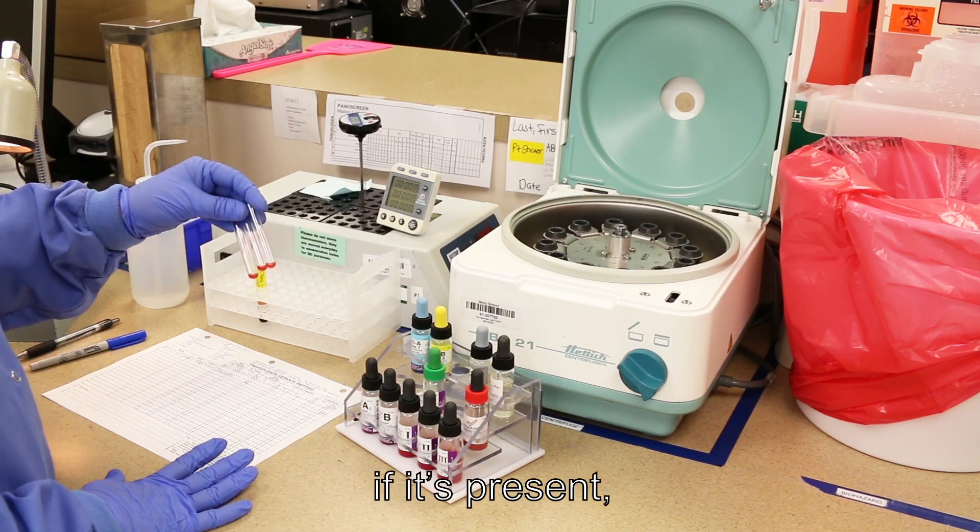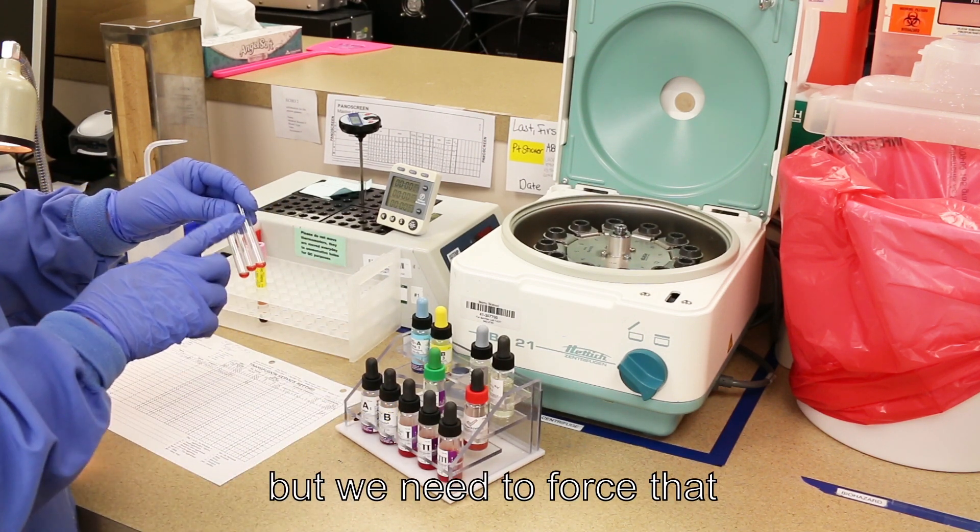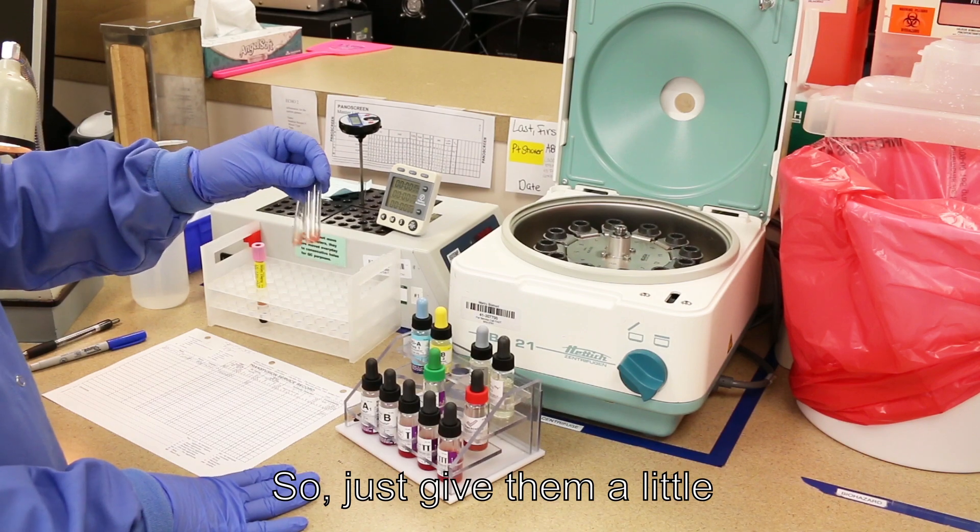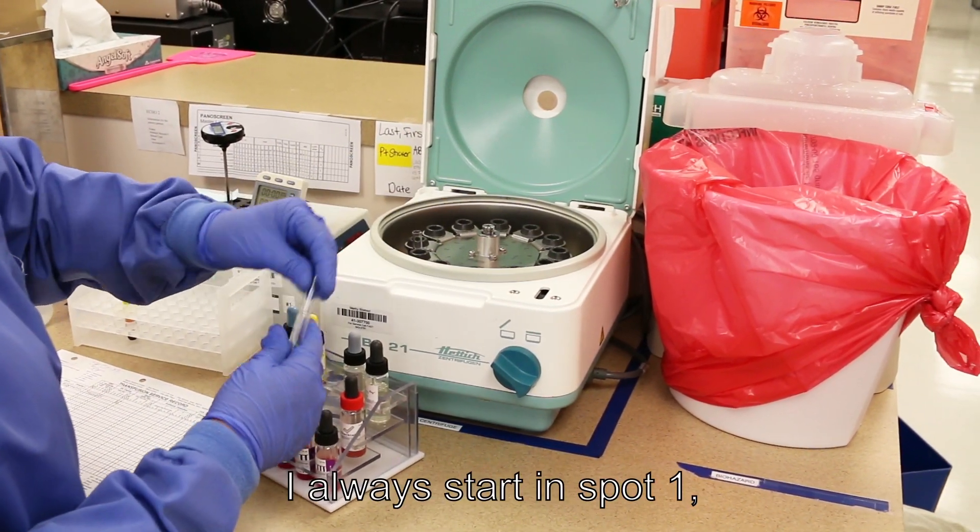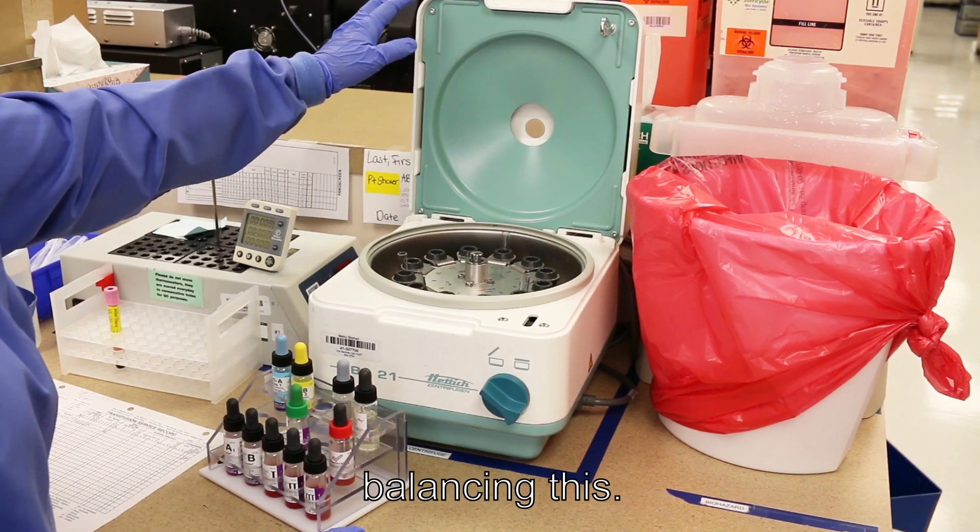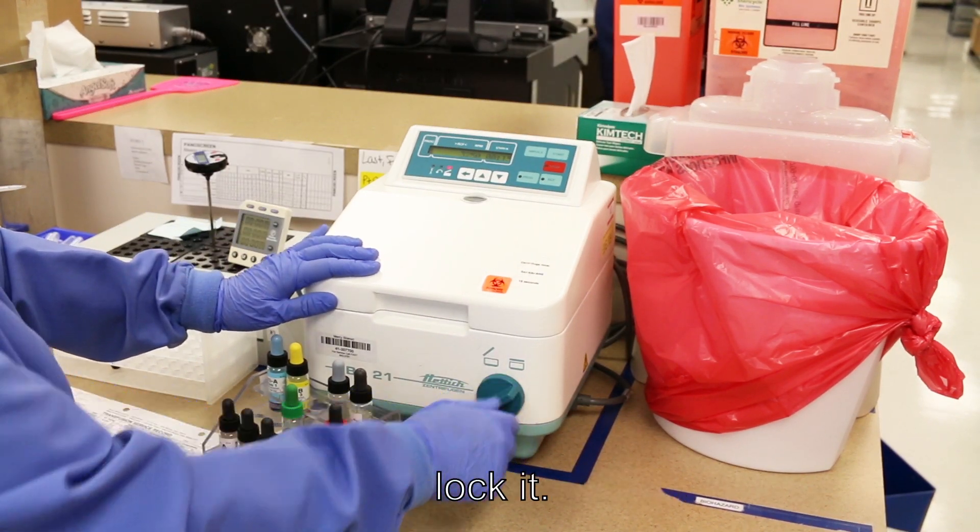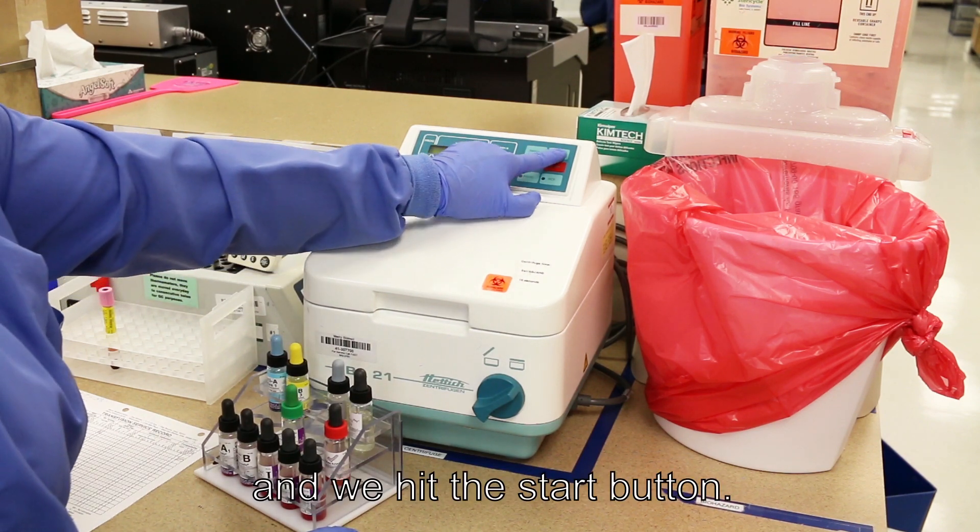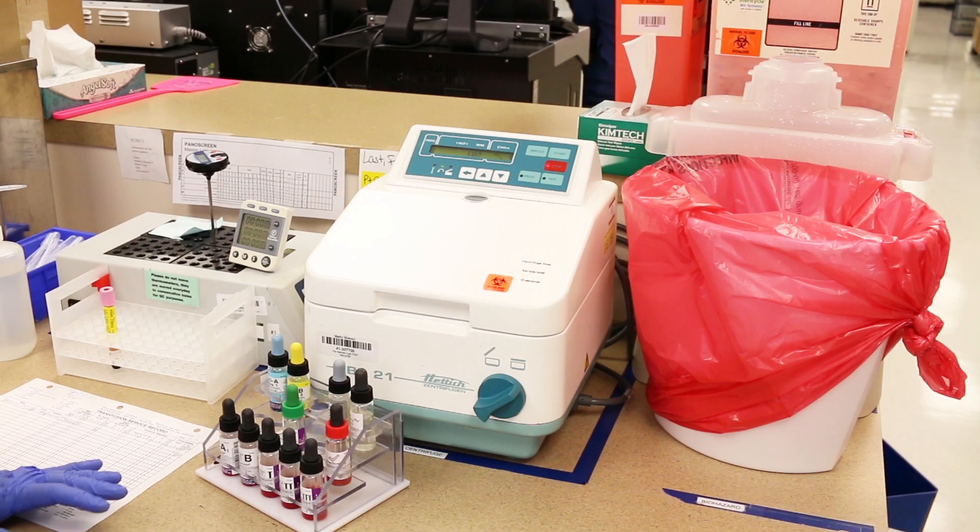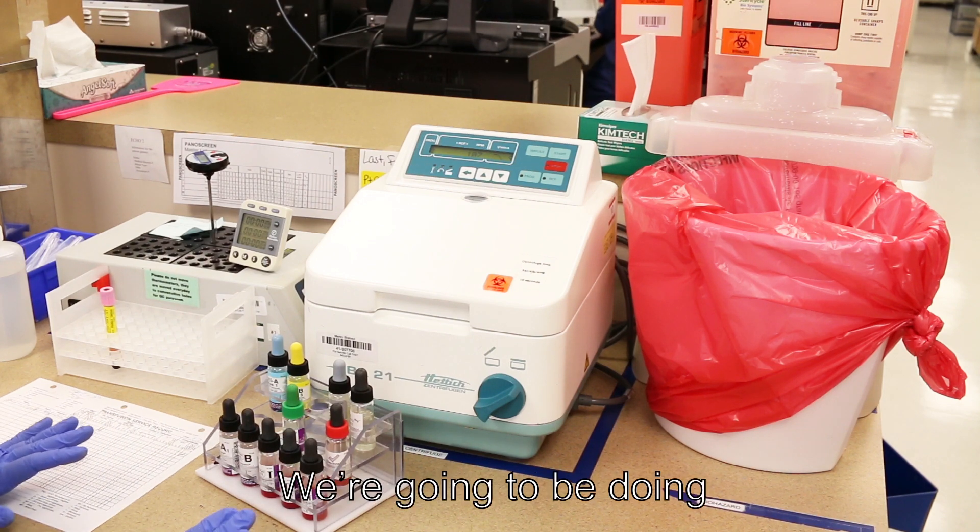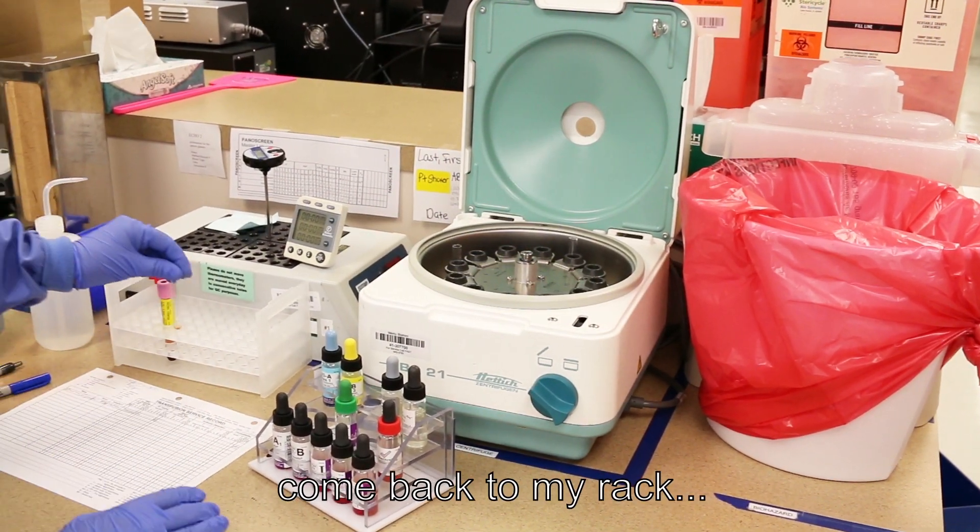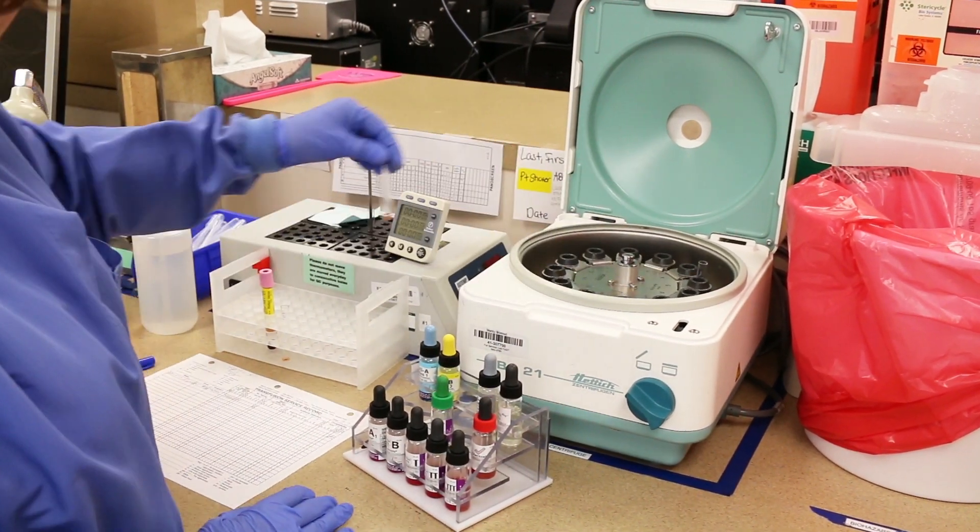So we want our antibody, if it's present, to attach to the antigen on the screening cells, but we need to force that reaction to happen, so we're going to put these tubes in the centrifuge. Just give them a little shake like this, and then we're going to start in the centrifuge. I always start in spot 1, because I like to keep things in order. And this is like a triangle, so that's how we're balancing this. Close your centrifuge, lock it. Needs to be at 3250 for 15 seconds, and we hit the start button. This stage is the immediate spin phase. We're going to be doing three phases with our antibody screen.